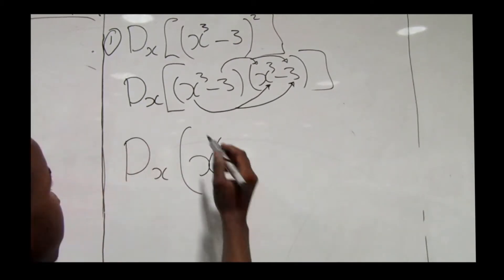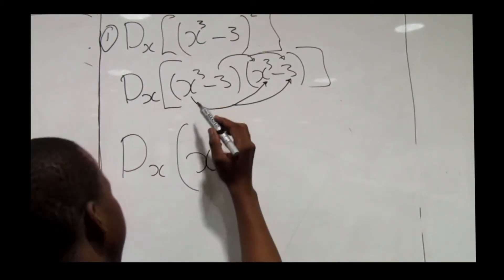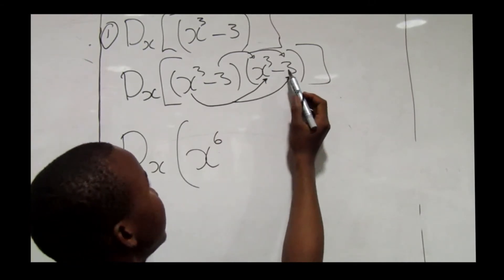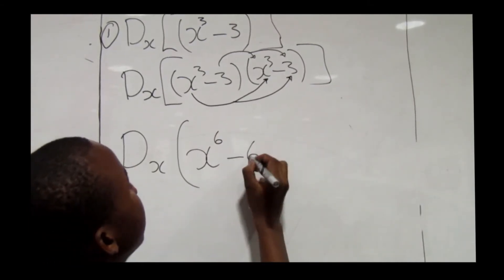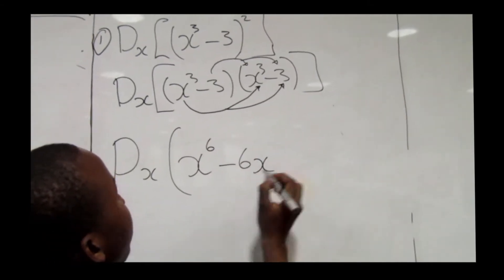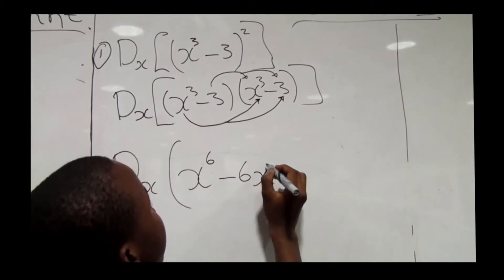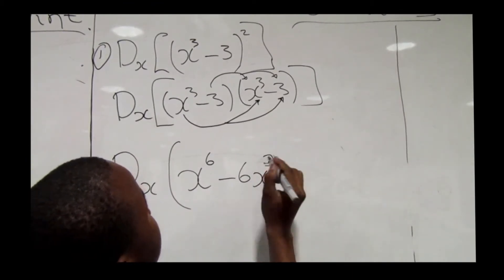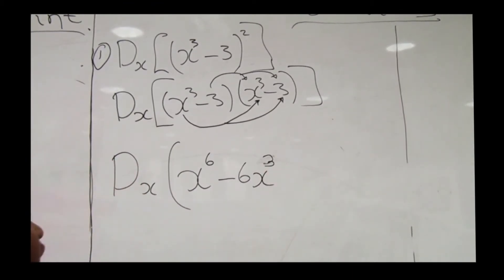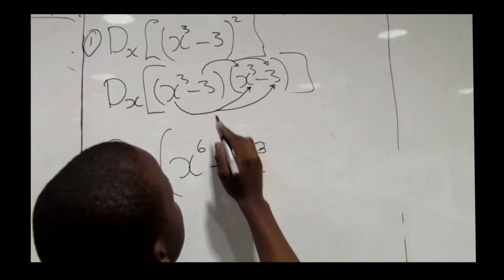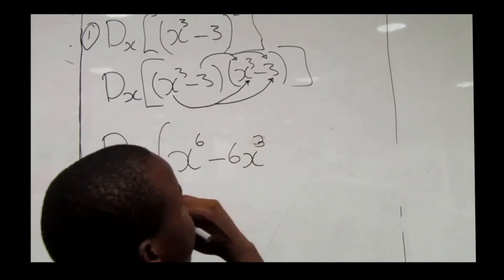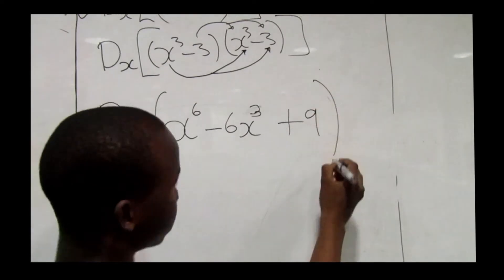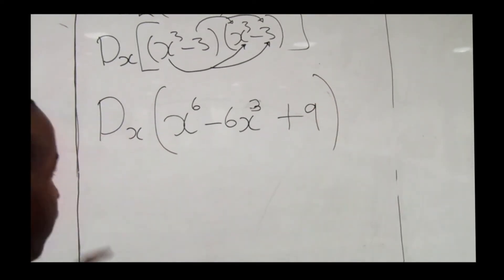Then we have x³ times negative 3 and x³ times negative 3 again, which gives us negative 6x³. Then negative 3 times negative 3 gives us positive 9.